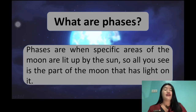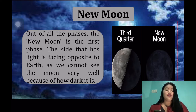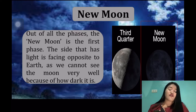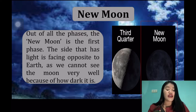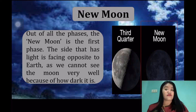For example, here we have the new moon. Out of all the phases, the new moon is the first phase. The side that has light is facing opposite to the Earth, so we cannot see the moon very well because of how dark it is. The new moon is when the sun and moon are aligned, with the sun and Earth on opposite sides of the moon. If you compare the third quarter and the new moon, in the new moon you cannot see any light from the moon at all because the sun and the moon are aligned and it is covered.